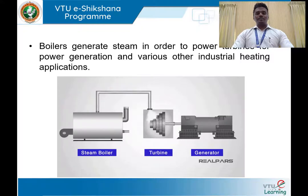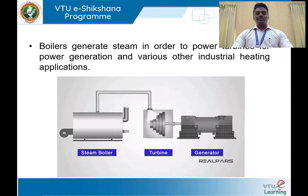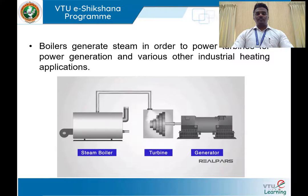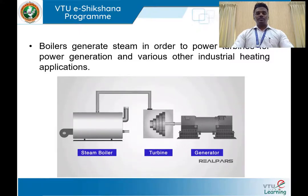Apart from those applications, steam can also be used for generation of power. Steam contains thermal energy, and that thermal energy can be used to run a steam turbine. The steam turbine is coupled to an electrical generator, so when the steam turbine rotates at the required speed, electricity can be generated. Mainly, steam is used for two domains: process heating applications and power generation applications. For process heating, we may use a hot water boiler supplying hot water for domestic as well as industrial applications. For power generation, steam is used for generating electrical power using a steam turbine.